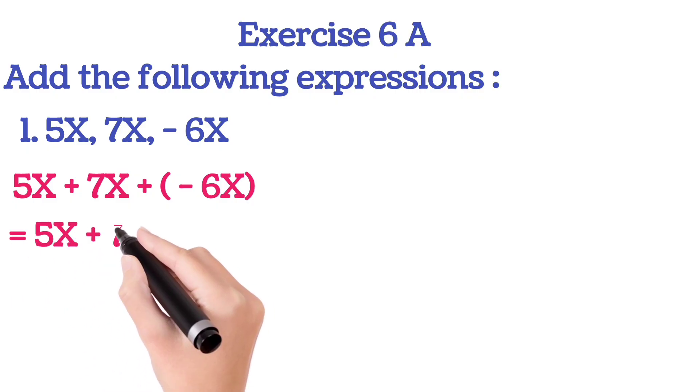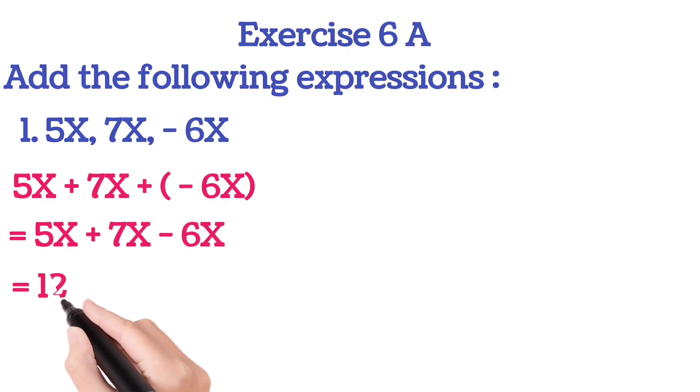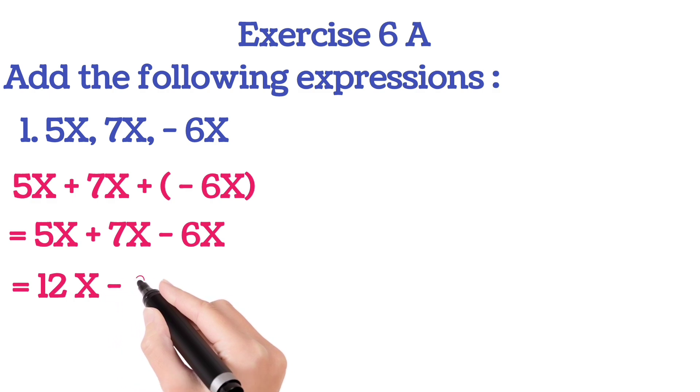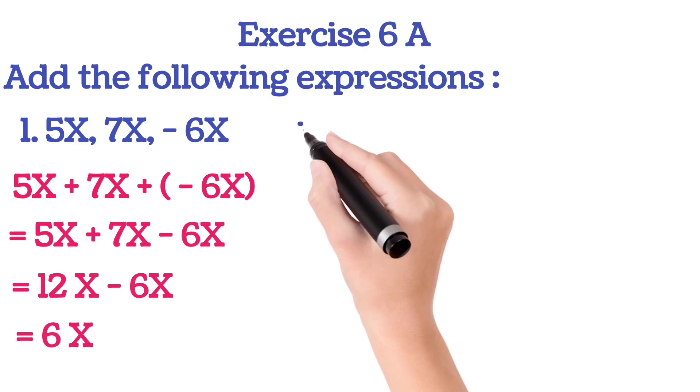5X plus 7X plus minus 6X. First you add 5X plus 7X, so you will get 12X minus 6X. So 12 minus 6 is 6. So our answer is 6X. Hope all of you understood. Go for the next sum.